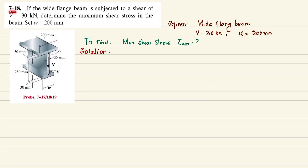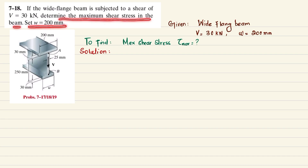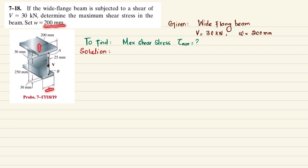Welcome back. Problem 7-18: a wide-flange beam is subjected to a shear of 30 kilonewtons. Determine the maximum shear stress in the beam. W is equal to 200 millimeters. This is the wide-flange beam acted upon by a shear force of 30 kilonewtons, and the width W is given as 200 millimeters — so the top and bottom flange widths are equal. We need to find the maximum shear stress.